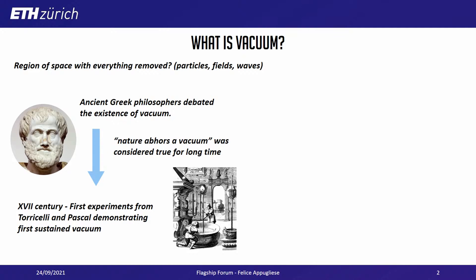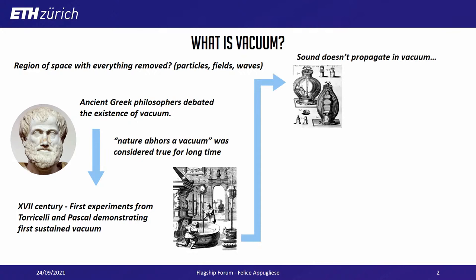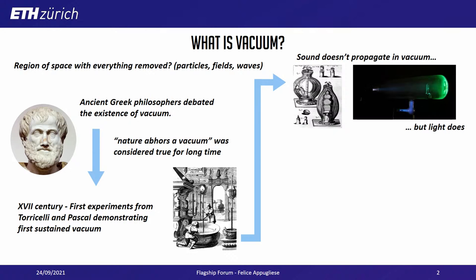If you put mercury into a glass tube, it's actually possible to observe vacuum at one extremity. Besides that, the properties of vacuum were also investigated, and people realized soon that sound doesn't propagate in vacuum.